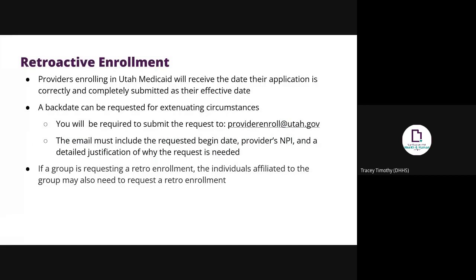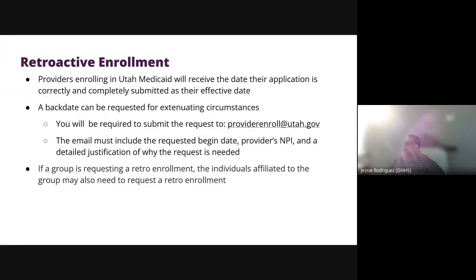A retroactive begin date can be requested for extenuating circumstances by submitting a detailed justification statement, along with the MPI and provider name. These requests can be emailed to providerenroll@utah.gov.